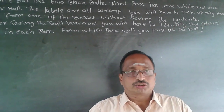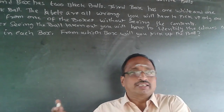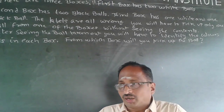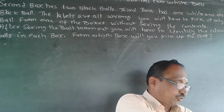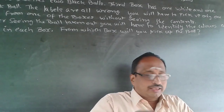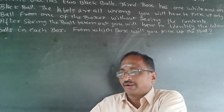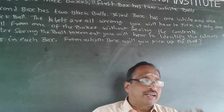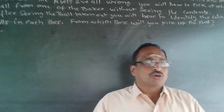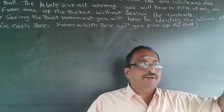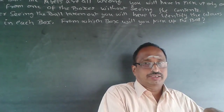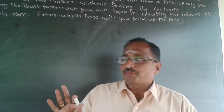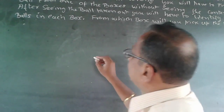This is a logical reasoning question. Let's understand the question first. There are three boxes and the labels mention what is inside — two white balls, two black balls, or one black and one white ball. But the labels are all wrong, so if the label says two black balls, I cannot have two black balls inside. It will be either white and white or black and white.